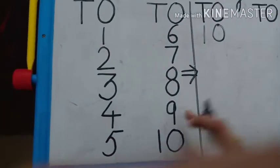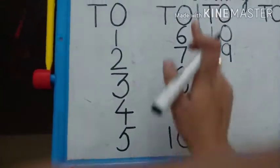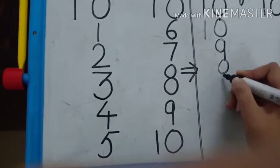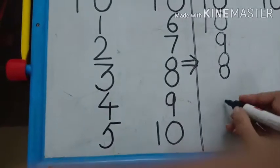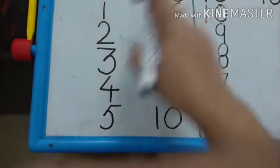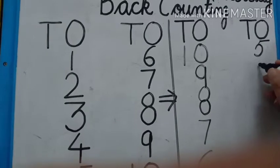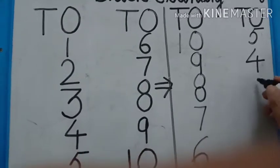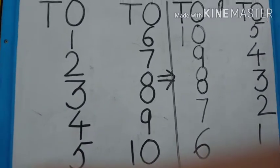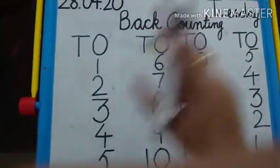Phir 10 se pehle aapne kya karna hai? Back aana hai. To aap aise nahi jaoge, aap aise chadoge, kaise jaoge? Aise. Phir 9, then 8, then 7, then 6. Ab ho gaya, 6 se pehle 5, then 4, then 3, then 2, then 1, 0. What is this? Back counting.